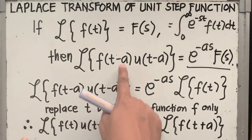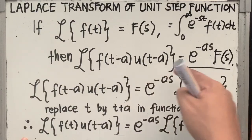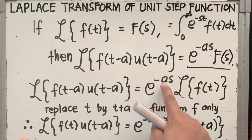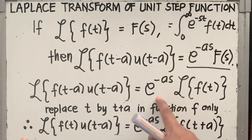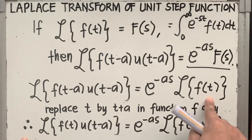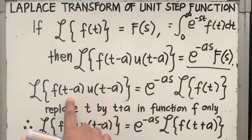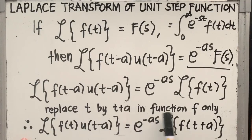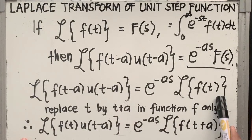The Laplace of the function shifted by a units times u of t minus a is equal to e raised to minus as. Remember that we have e raised to minus as in its transform. You can put that before the operator, which is the Laplace of f of t. Since we are finding the Laplace of f of t times u of t minus a, we need to replace t by t plus a in function f only, as you can see on both sides of the equation.